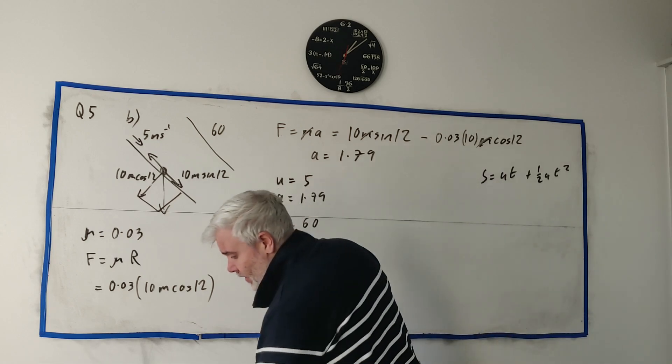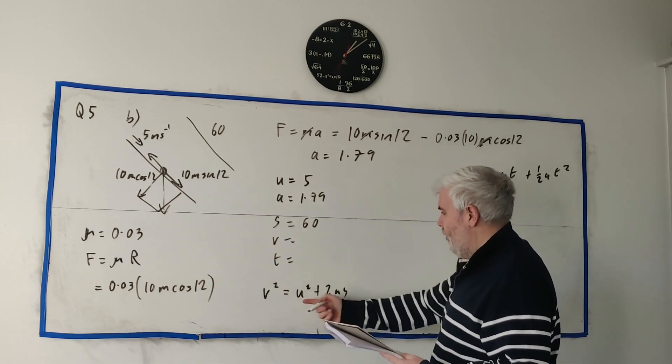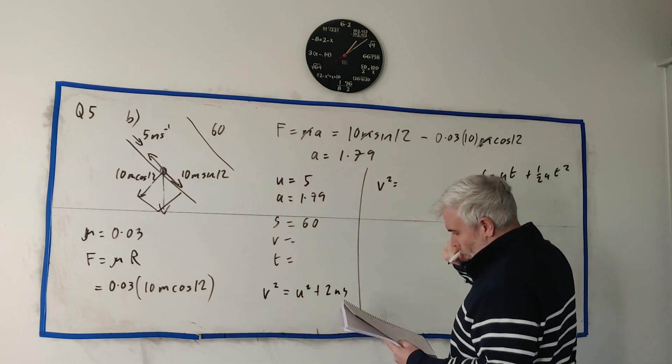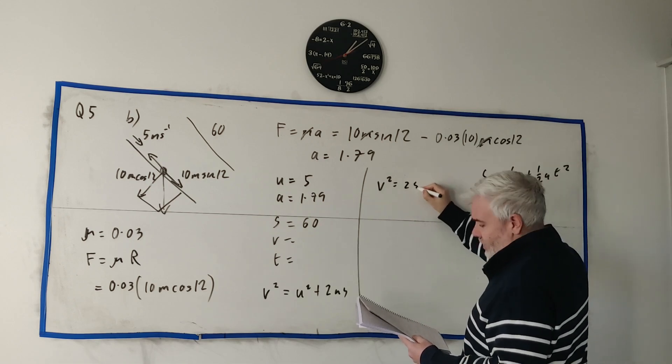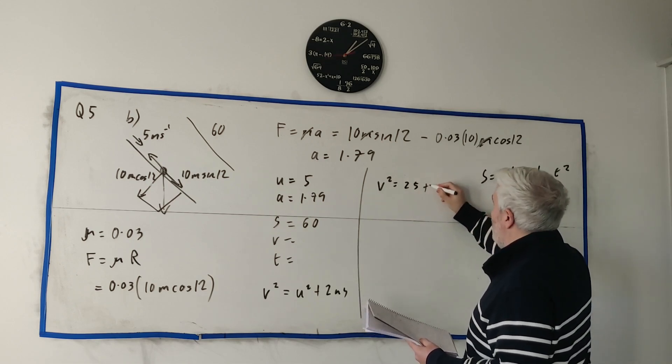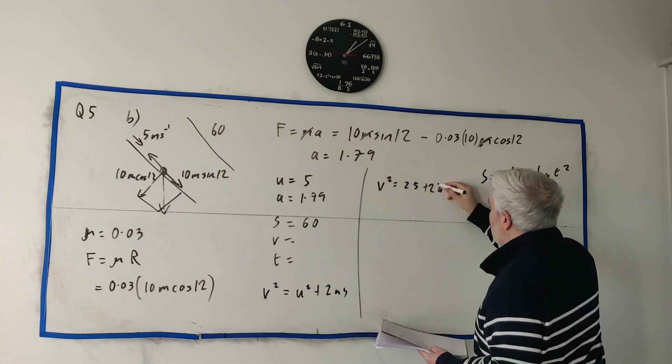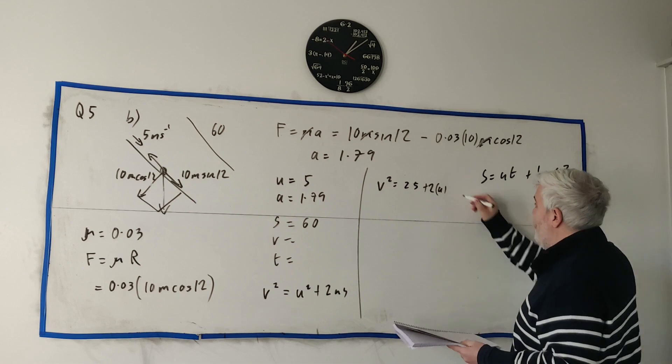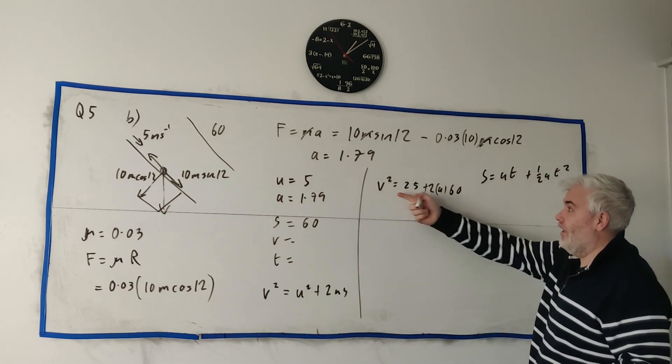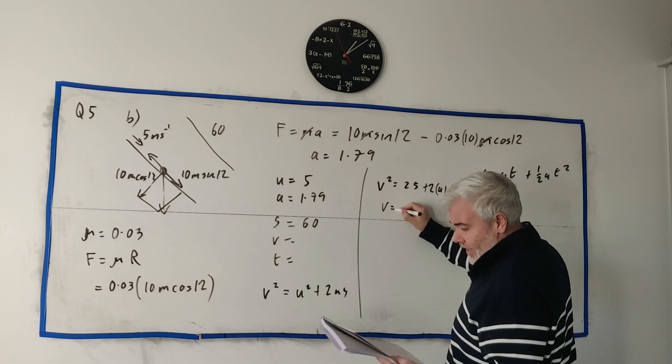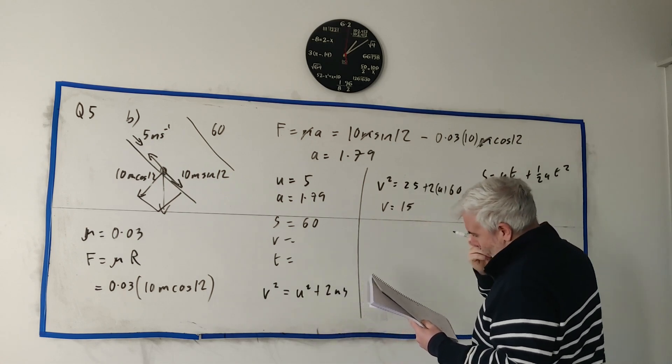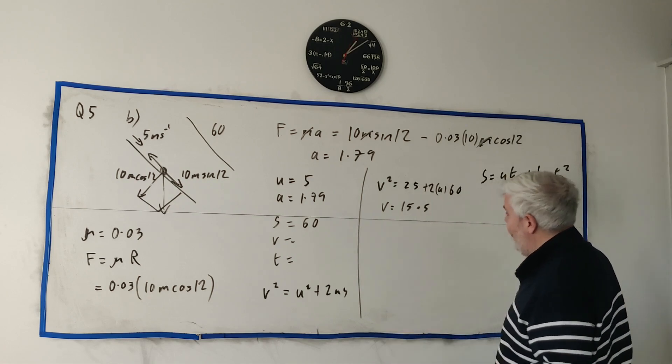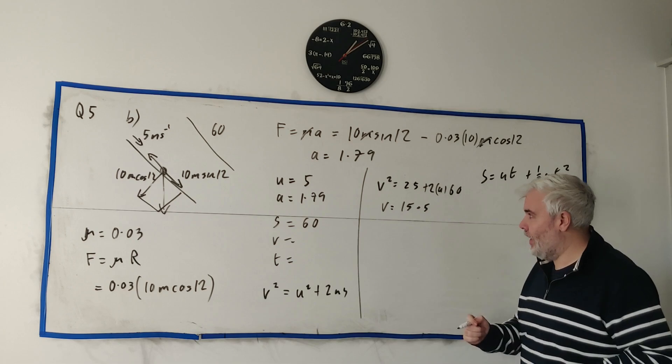Solving for this, V squared is equal 25 again, plus 2 times this big mess, a. I'll leave a in. Remember, that's on my calculator. And then times 60. So I just put all this in my calculator and then get the square root of it. And I find v is equal 15.5. Again, I'd keep this in on my calculator.